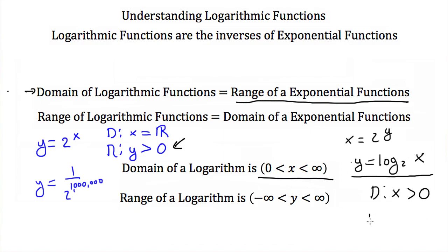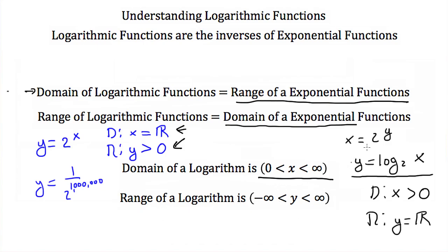The range of the logarithmic function is the domain of our previous exponential. The domain of that exponential was x could be all real numbers, which means y can be all real numbers. So the domain of a logarithm is that x has to be greater than zero — you have to have a positive number. But the range of a logarithm is that you could get any number as an answer.